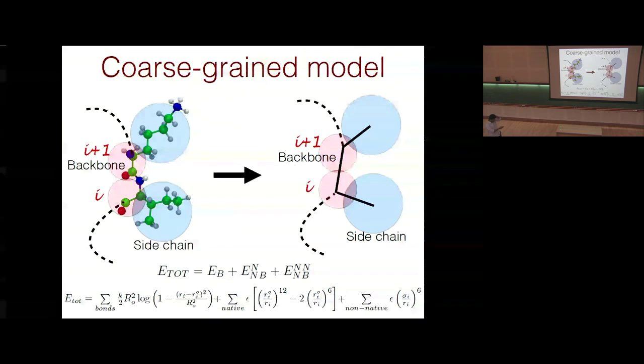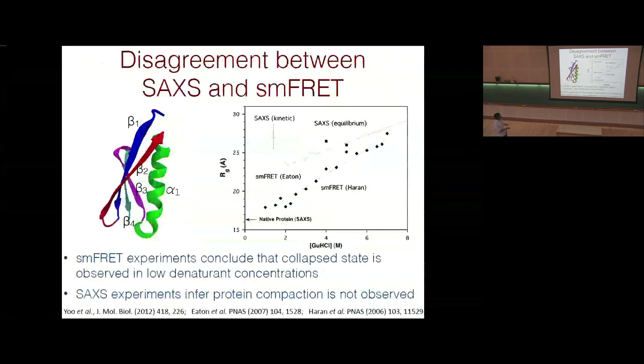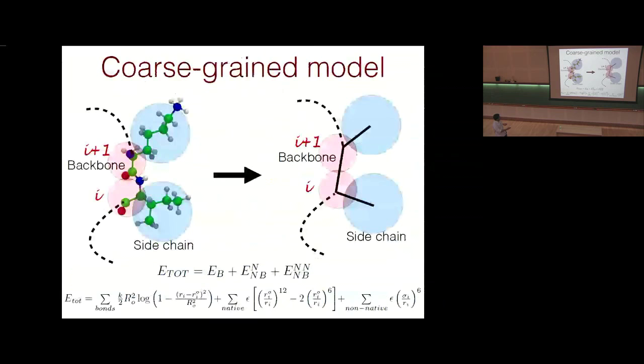In the coarse-grain model, residue i and residue i+1 are represented along the chain contour. Backbone atoms are replaced by one effective bead and side chain atoms by another. The energy function has a bonded term and a non-bonded term. The bonded term uses a finite extensible nonlinear elastic (FENE) potential. For non-bonded interactions, native pairs — those appearing in the contact map — interact via a Lennard-Jones potential, while all other pairs are purely repulsive.